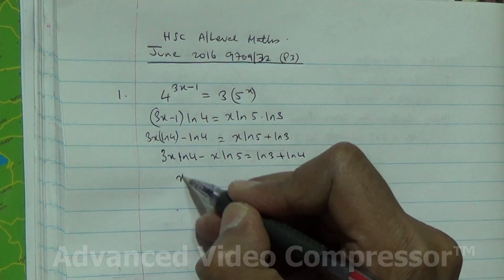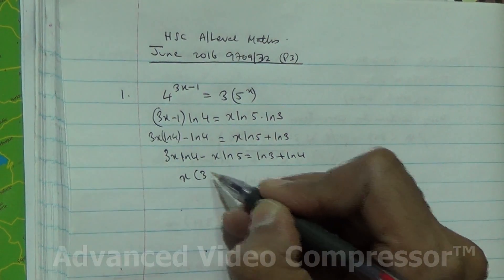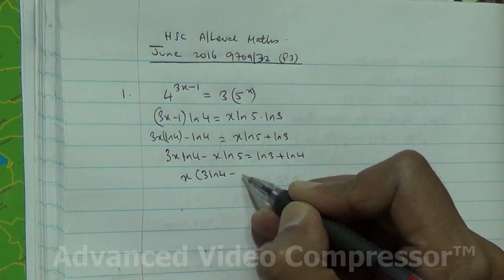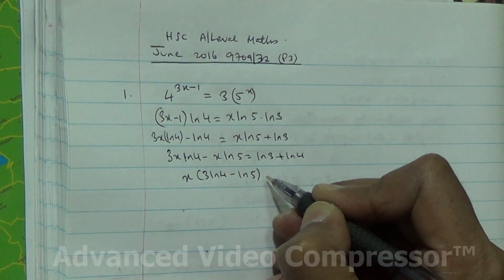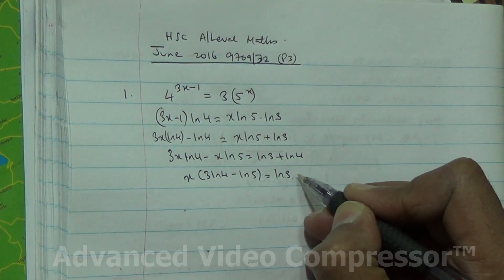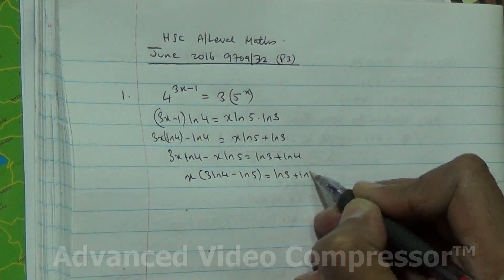x is common, so we can factorize, and we have 3 ln 4 minus ln 5 inside the bracket, and now I've got ln 3 plus ln 4.